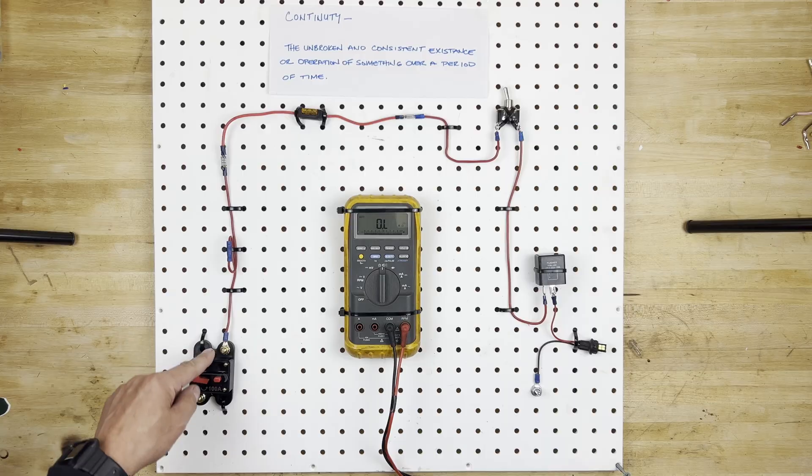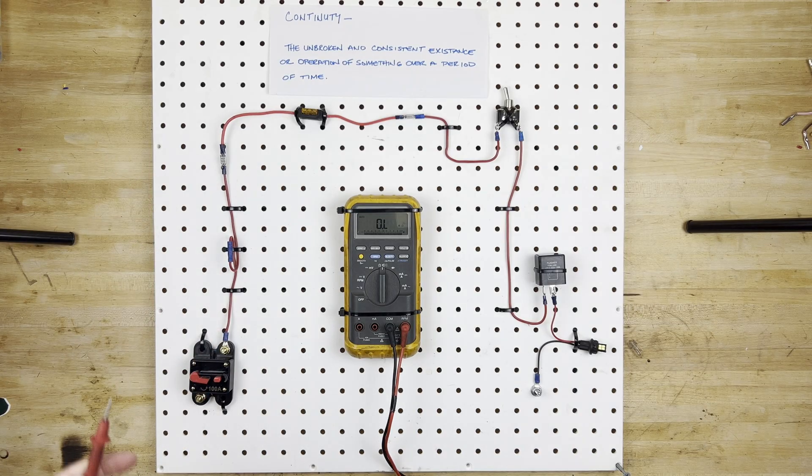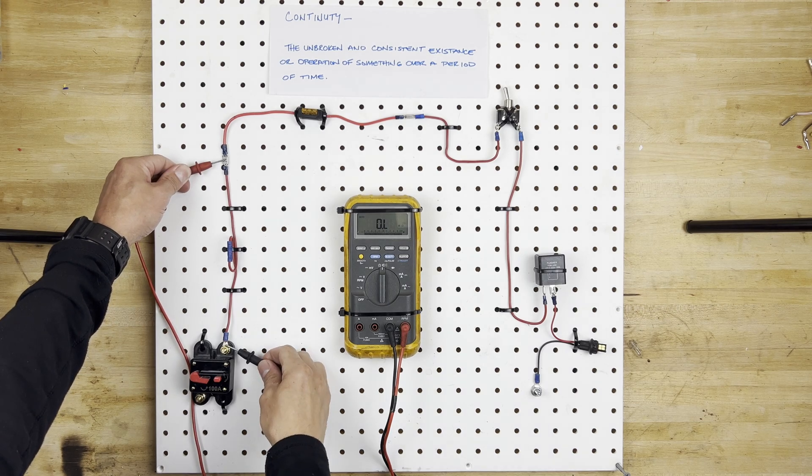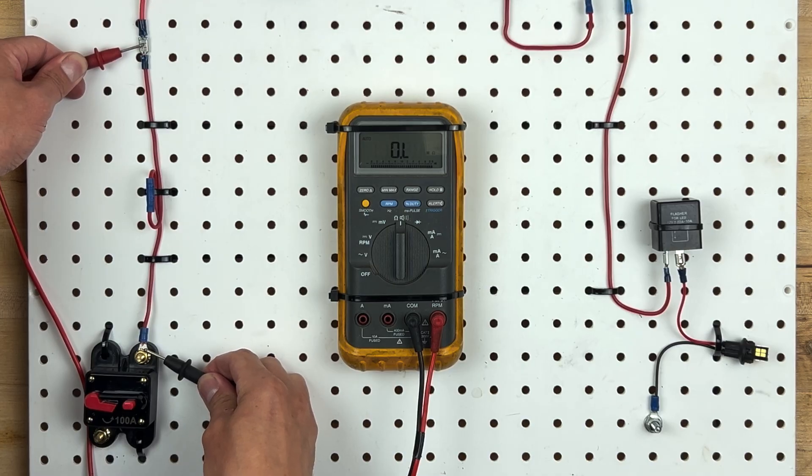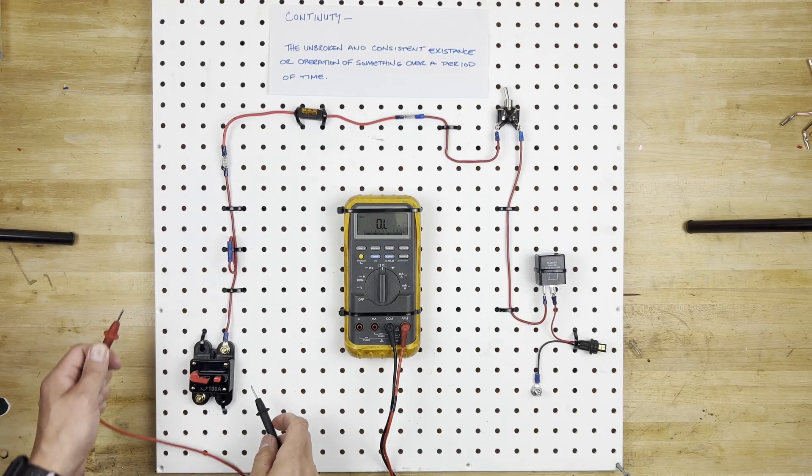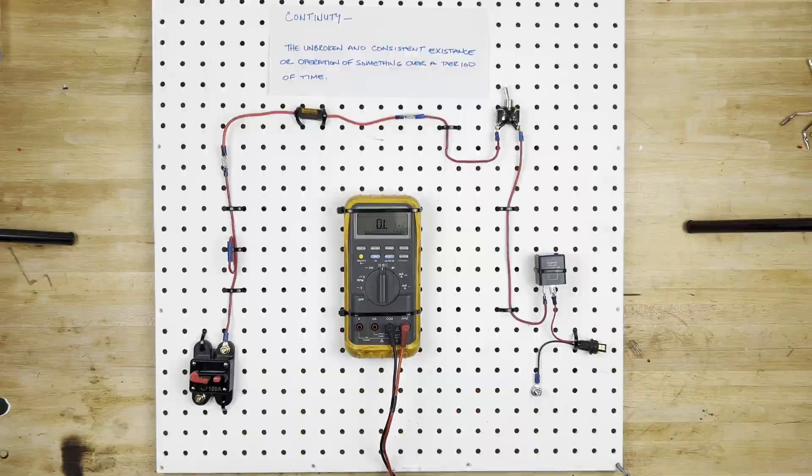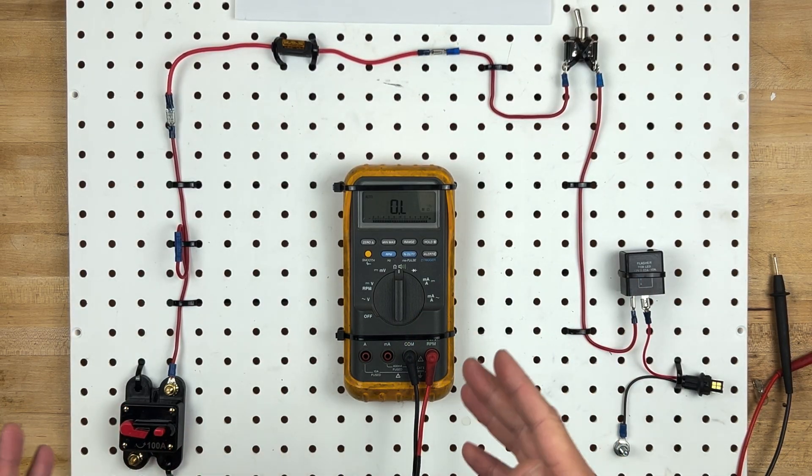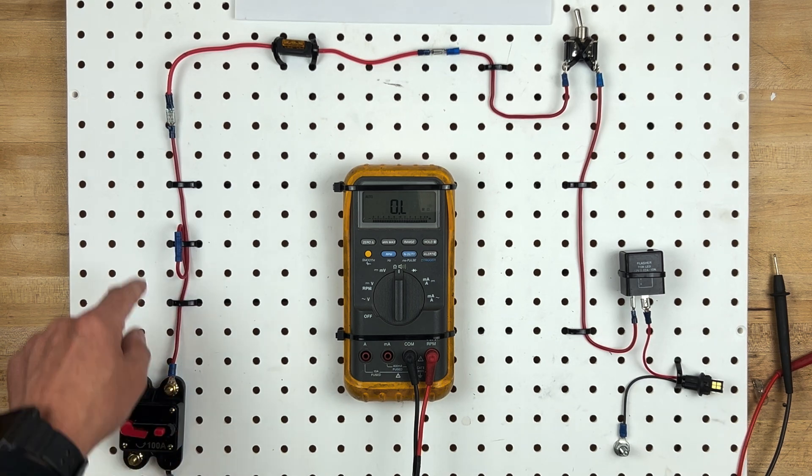And we'll see if there's power here. So we'll take the positive lead of the meter, pop it on here, and the negative here, and we can see that there is no continuity between the two, which means there is a break in this wire between here and here. Now, if this was in your own car, you would just visually look at the wire and see if there's an obvious break between this point and this point.